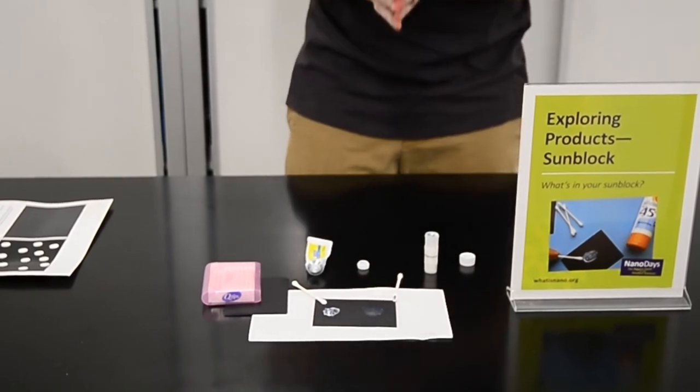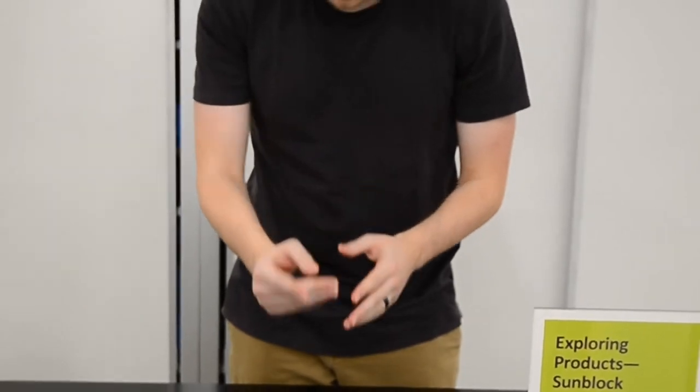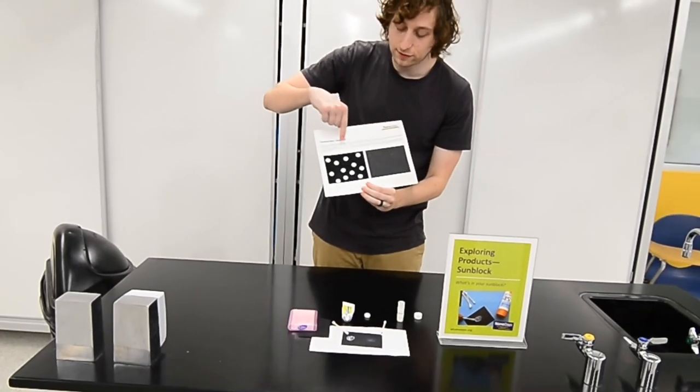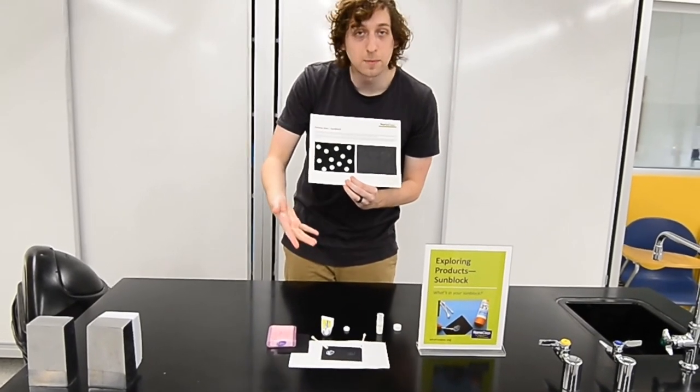Well, the secret to all of this is nanoparticles. You see, these particles here are really large for this sunscreen. They kind of look like this. They're so large, they reflect visible light as white light. That's why it appears white to you.